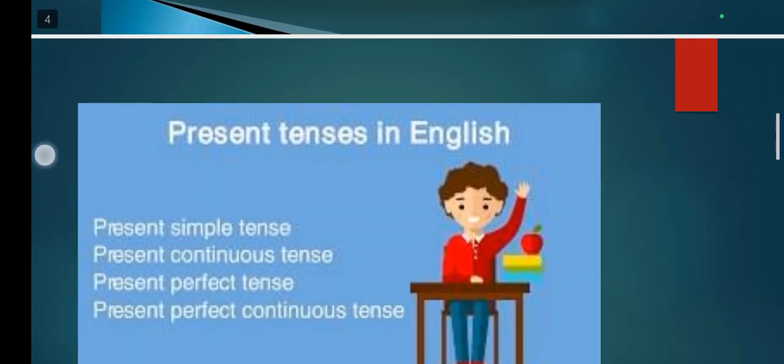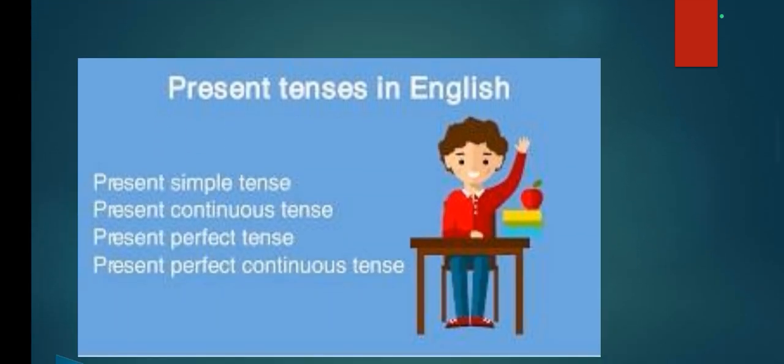Present tense is divided into four different forms: present simple tense, present continuous tense, present perfect tense, and present perfect continuous tense.